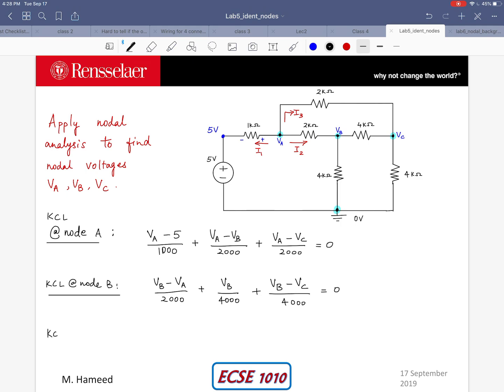Similarly I get KCL at node C: VC minus 0 divided by 4000. That's the current going down through that 4 kilo ohm resistor. Then I have VC minus VB divided by 4000, and then VC minus VA divided by 2000 for the current flowing in the outer loop. So that equals 0.